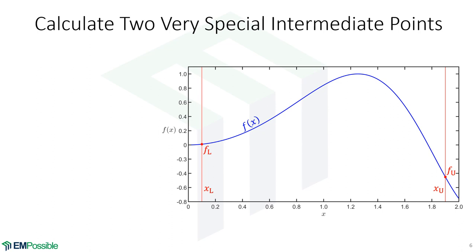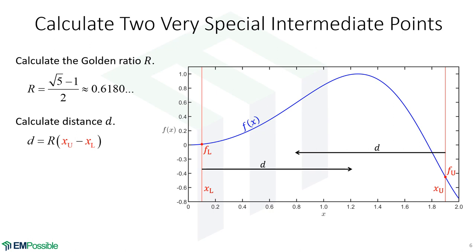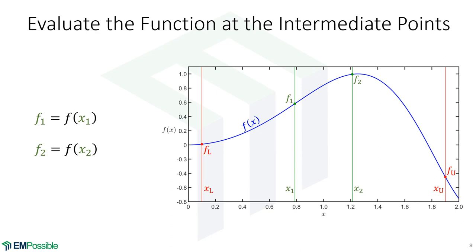At this point we want to calculate two very special intermediate points. First we'll calculate the golden ratio — we'll derive this at the end, but it's about 0.62. Once we have the golden ratio, we calculate a distance d: we look at the span from our upper to our lower bound and multiply by the golden ratio. Then we come up from the lower bound by distance d and down from the upper bound by distance d, giving us two magical intermediate points called x1 and x2.